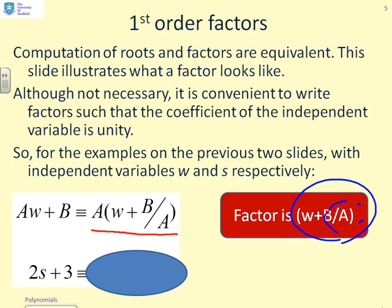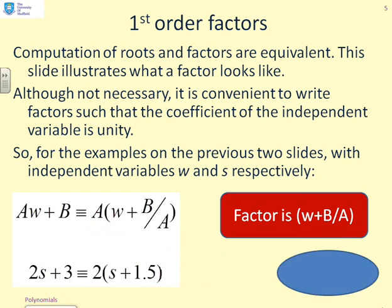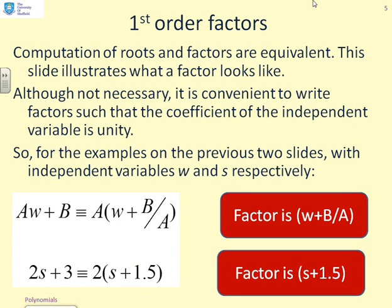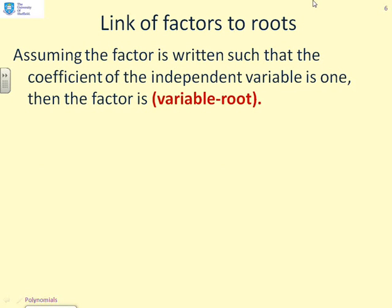Now, let's look at the next one, 2s plus 3. That can be written as 2 into brackets (s plus one and a half). So again, the factor has come out as s plus 1.5. And again, you'll notice the convenience of writing the factor in this monic form is the particular root position has fallen out because you'll see the plus 1.5. The root, in fact, was minus 1.5.